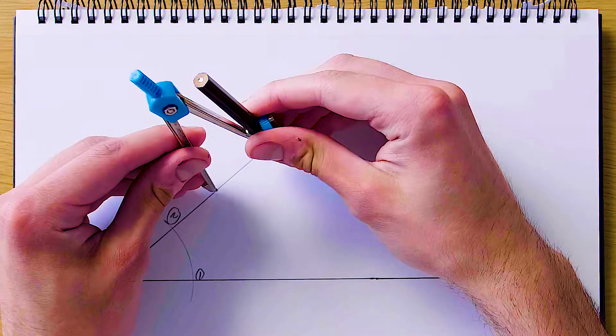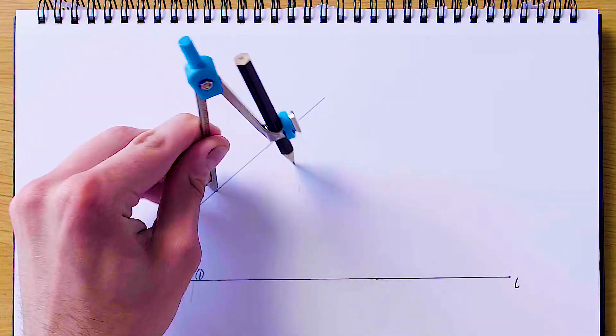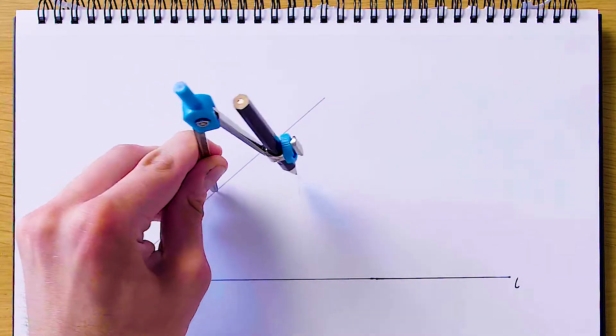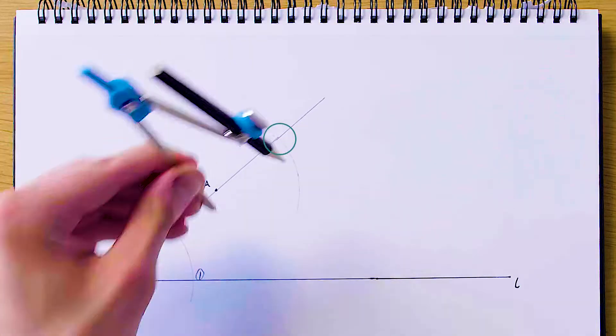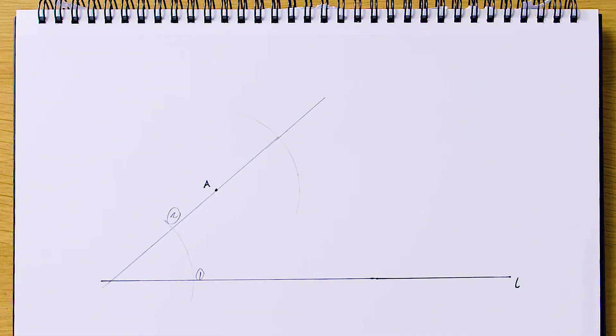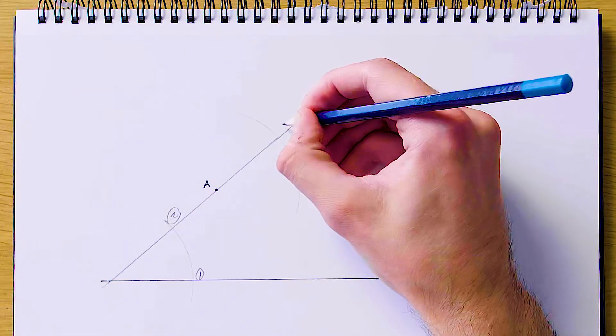And then we're going to get the same compass length again, and this time swing from the point A so that it crosses our line which originally passed through A, and it's going to look something like this. I'm going to call this up here vertex A3.